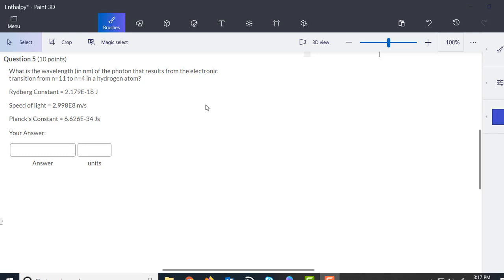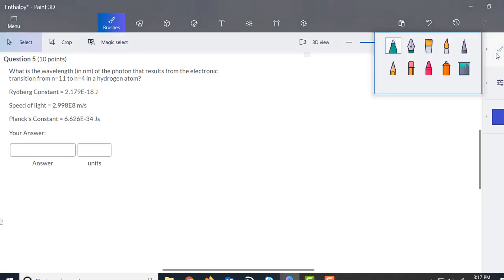So for this one we're looking for a wavelength, and wavelength is going to have to be found by defining the energy, followed by finding the frequency, and then finding the wavelength.